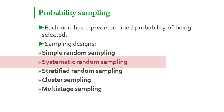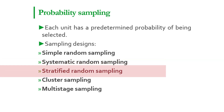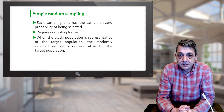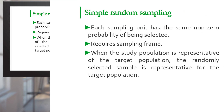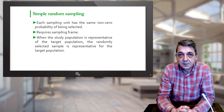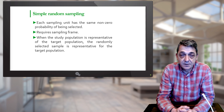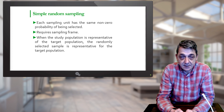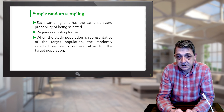In simple random sampling, each sampling unit has the same non-zero probability of being included in the sample. The selection process requires a sampling frame — we have to have the list of all animals in order to make the selection. For example, if we want to select 50% of the animals, we can use the most basic randomizer, which is flipping a coin. If the result is heads, then the animal will be sampled; if it is tails, the animal is not sampled.